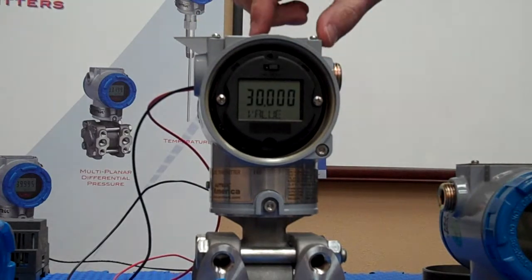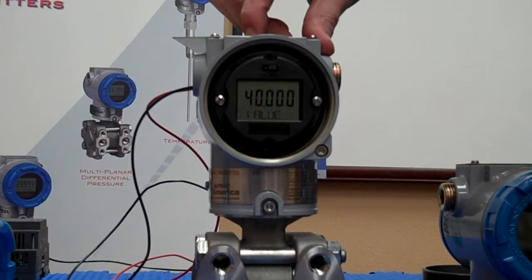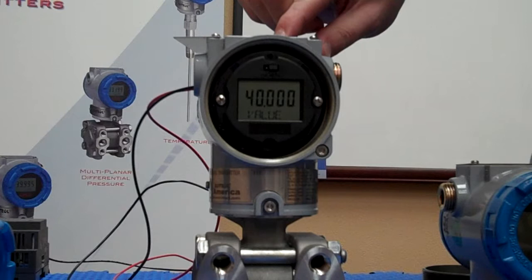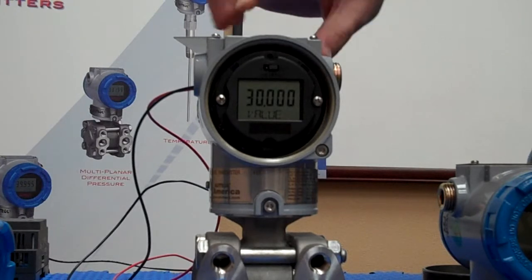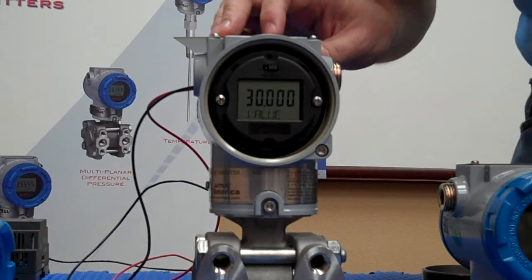Now, to make a change, the zero button will take us up, whereas the span button will take us down. Again, be reminded that we push for each incremental change. We push, wait for the change, and release.